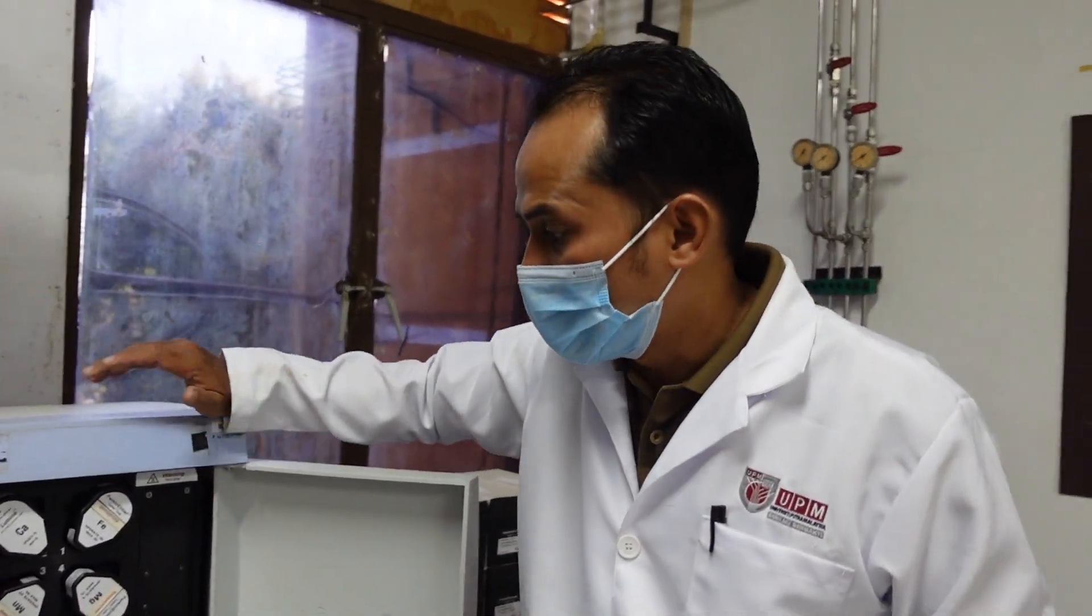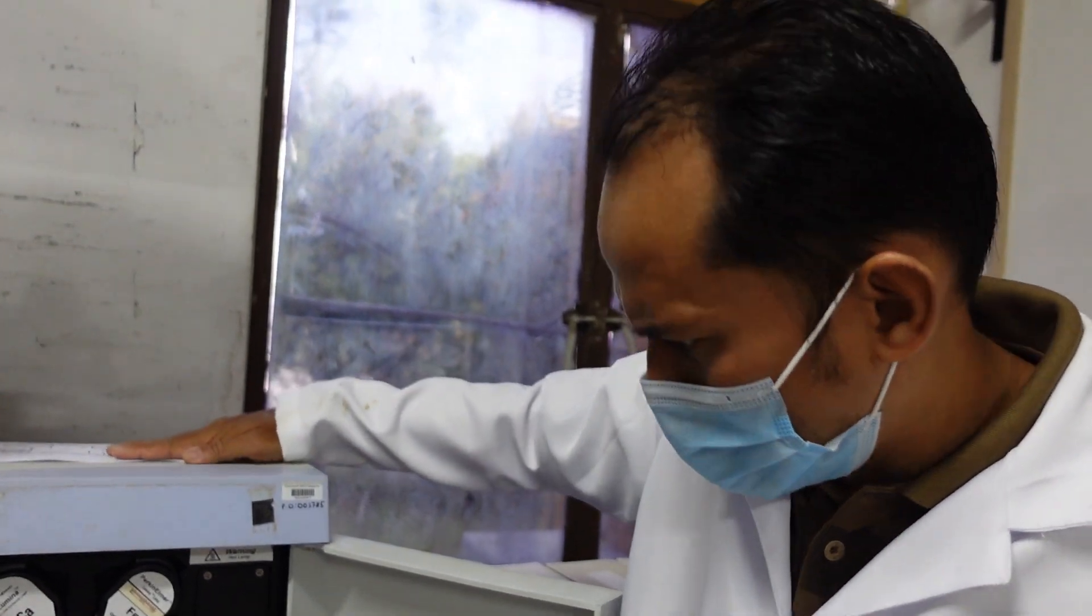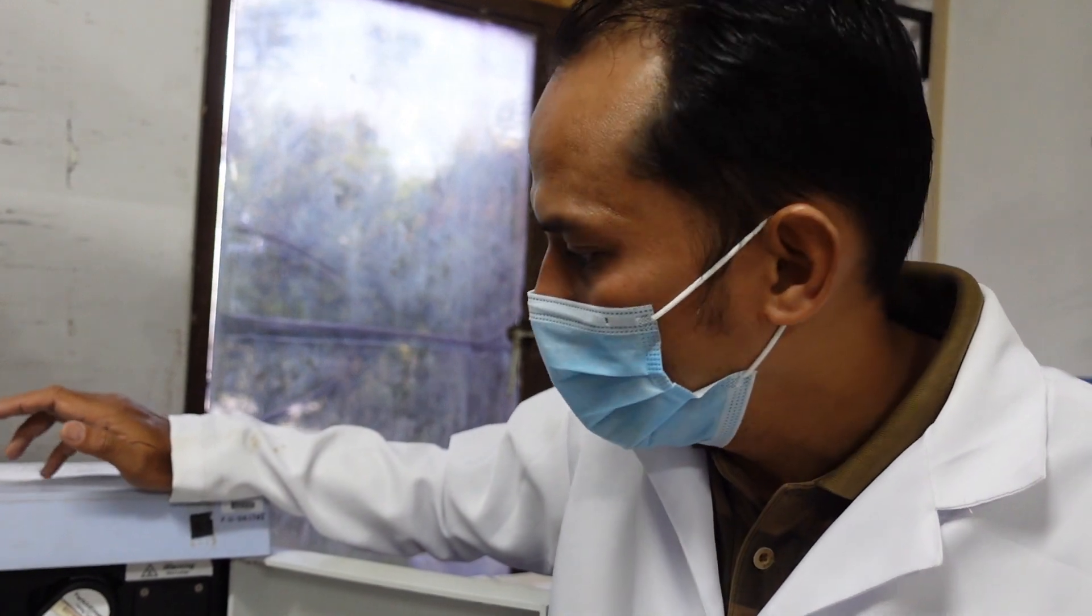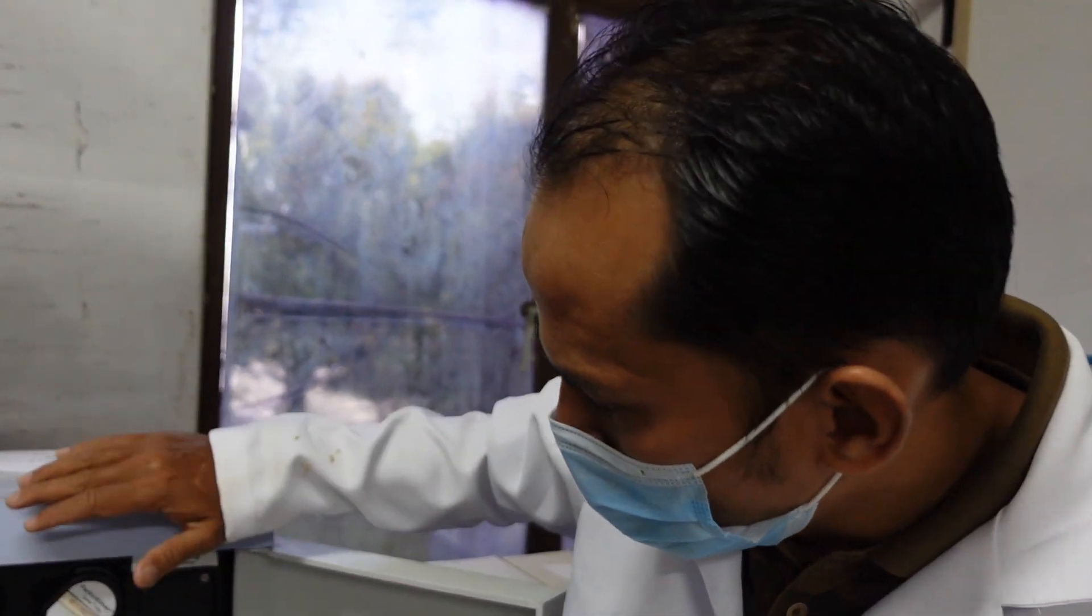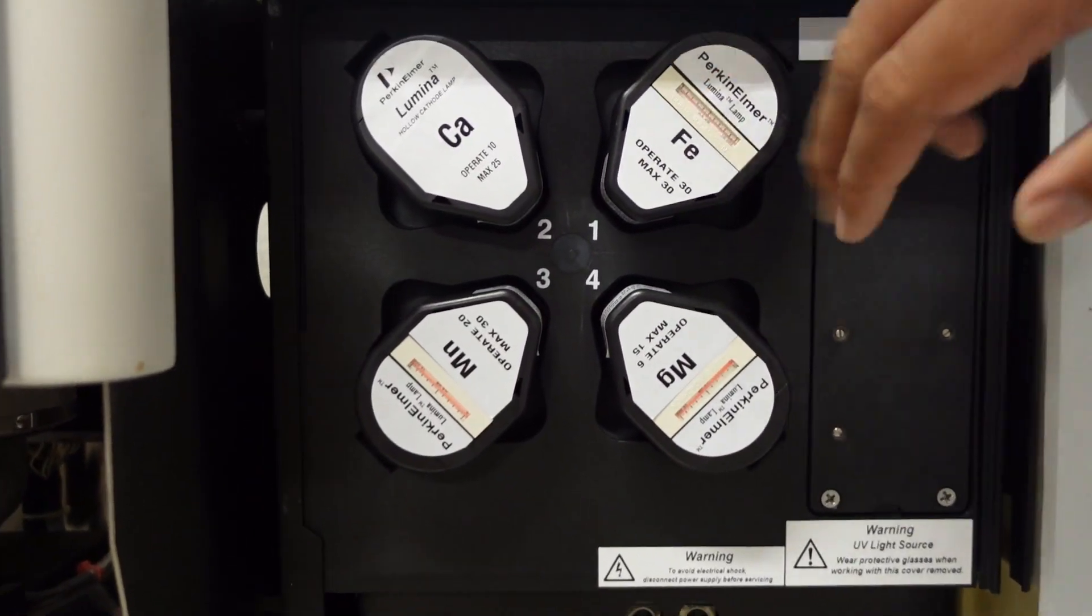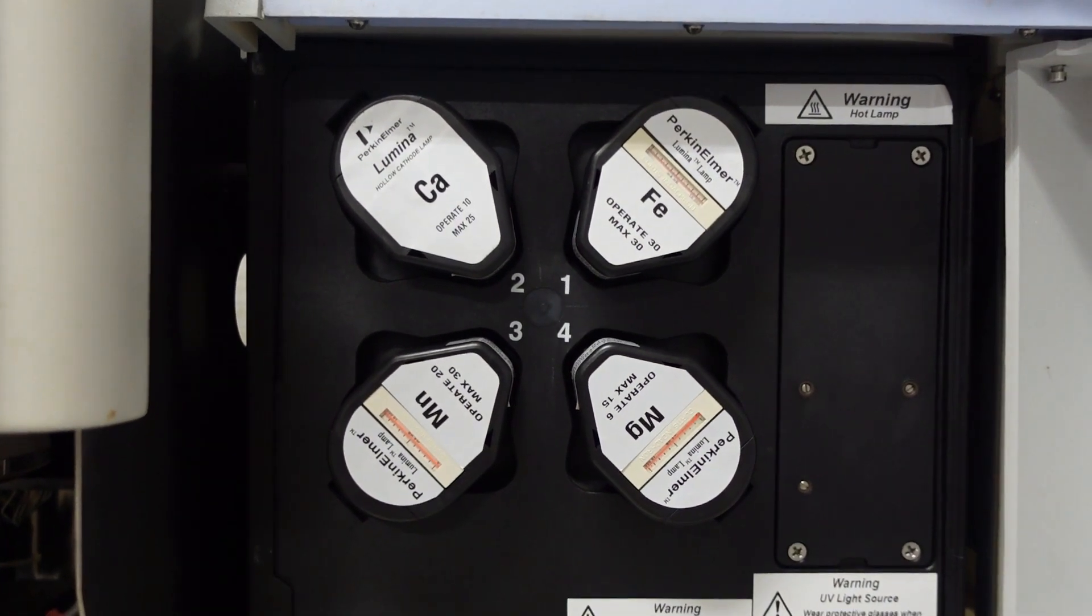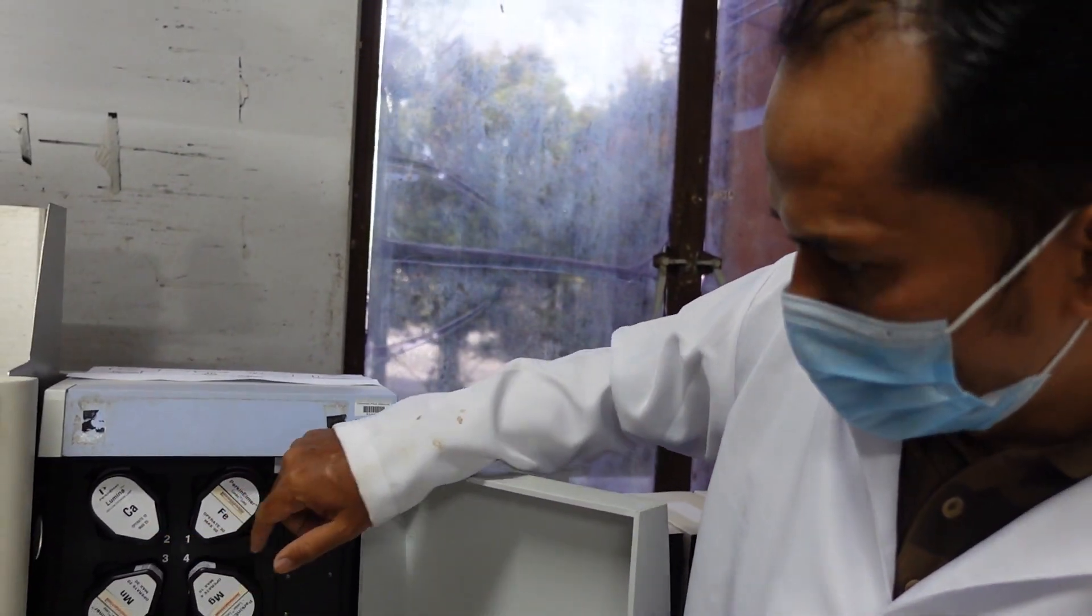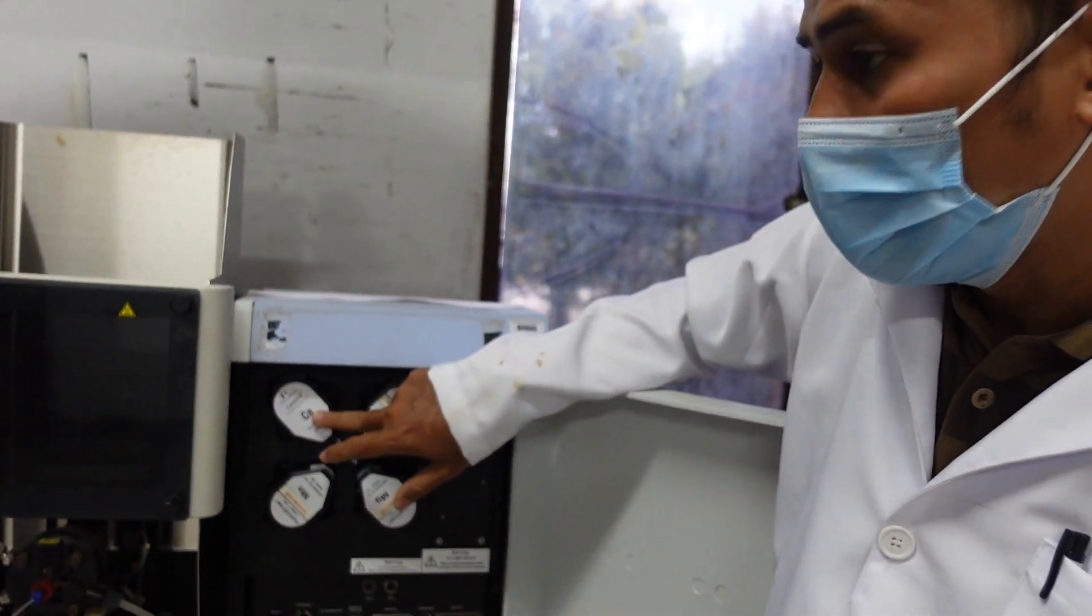Let me show you the lamp first. In AAS, the lamp is one of the most important elements. You need to have a specific lamp for the specific mineral that you want to measure. Here there's four slots. These are all interchangeable lamps. We have calcium, manganese, magnesium, and so on. For today's experiment, we're going to do calcium. I will explain about the lamp in the lecture.